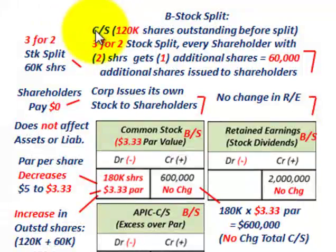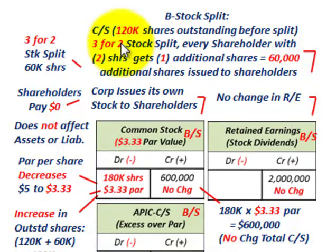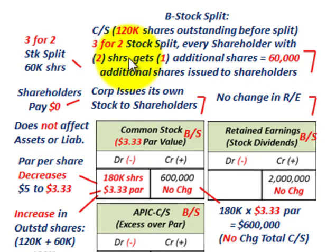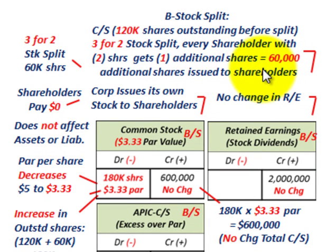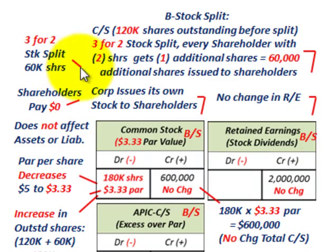Here's the stock split. We had 120,000 shares outstanding before the split. With the 3-for-2 stock split, every shareholder with 2 shares gets an additional share, so they end up with 3 shares for every 2 they owned. The shareholders pay nothing — just as with the stock dividend, there's no exchange of cash. The corp issues its own shares of common stock to them. For every 2 shares owned, shareholders get 1 additional share, equating to 60,000 additional shares issued, done on a pro-rated basis.